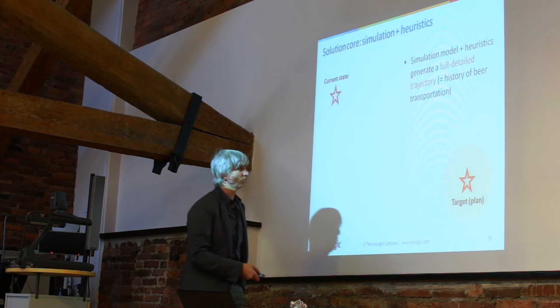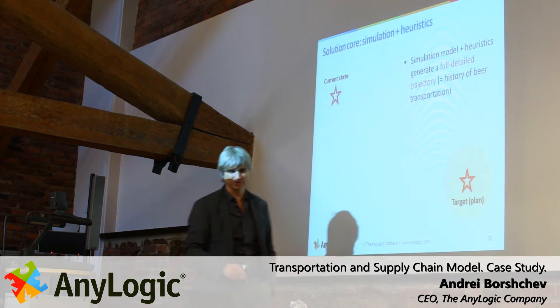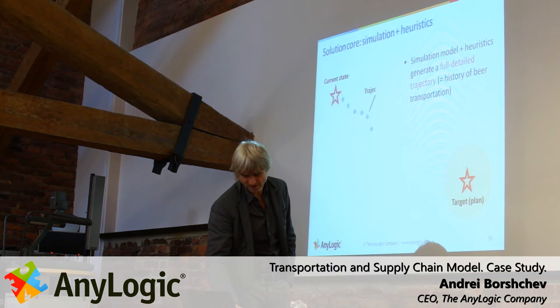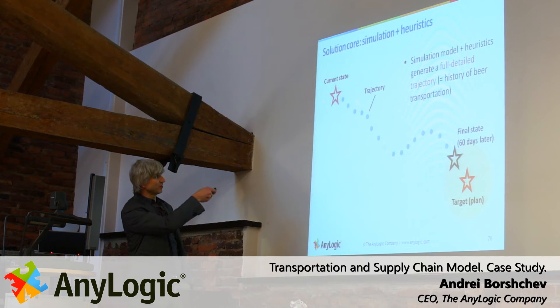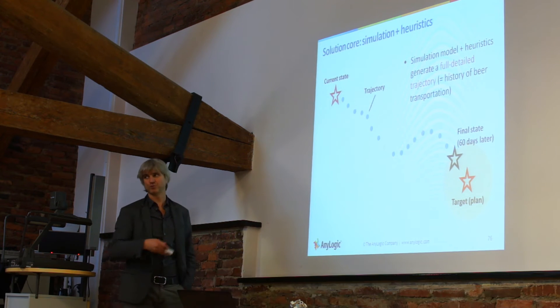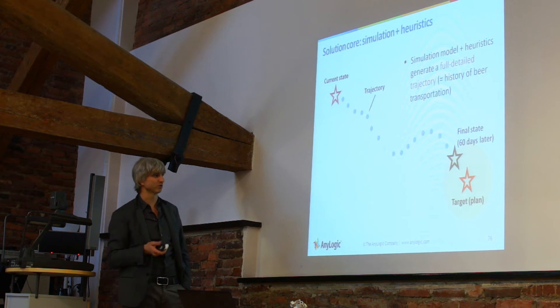So what our solution actually does? It takes the current state in the beginning of the planning period and builds a trajectory. Trajectory means how do we use our fleet of cars to transport beer, and then we arrived here and this is our target, this is the difference. So probably we have not fulfilled our target completely, our plan, but we're pretty close.